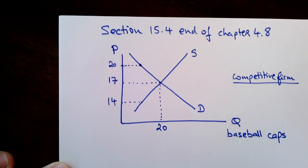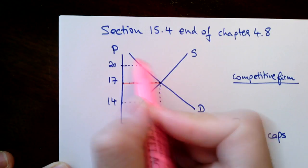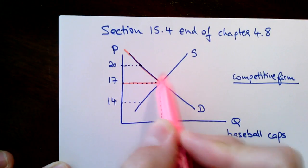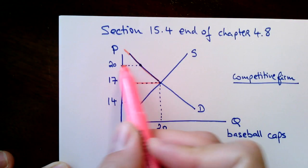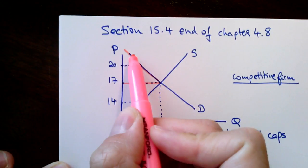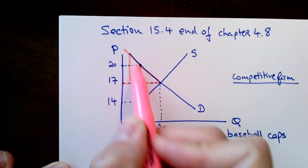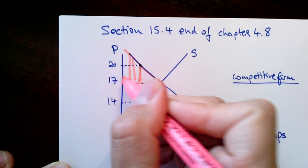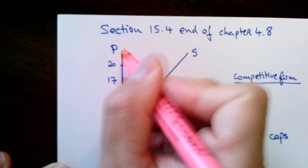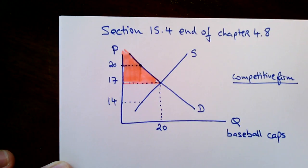Let's highlight consumer surplus and producer surplus. Consumer surplus is anything above the price line and below the demand curve. For example, this one consumer was willing to pay $20 and ended up only paying $17 — that's a surplus of $3. Maybe another consumer was willing to pay $22 and paid $17, that's a surplus of $5. If you keep adding up those heights, you end up with this triangle, which is what we call consumer surplus.